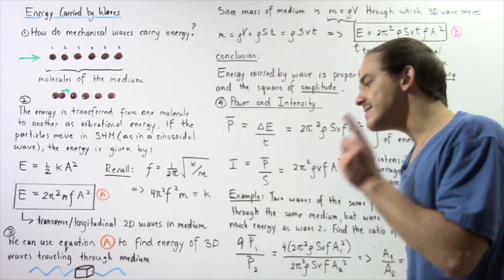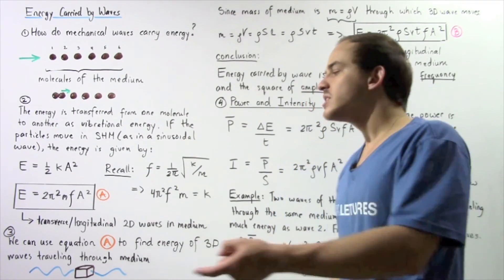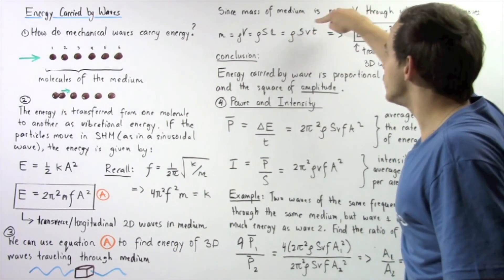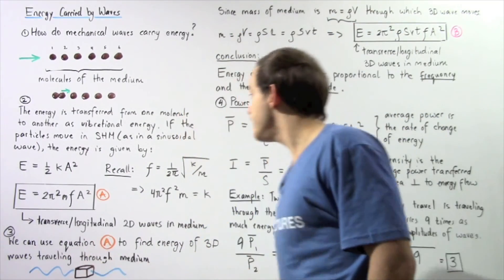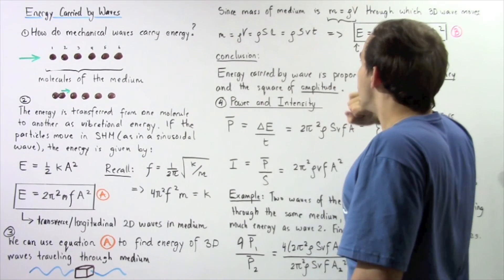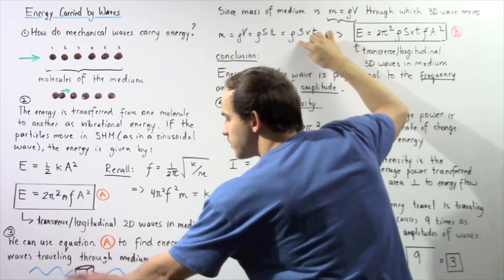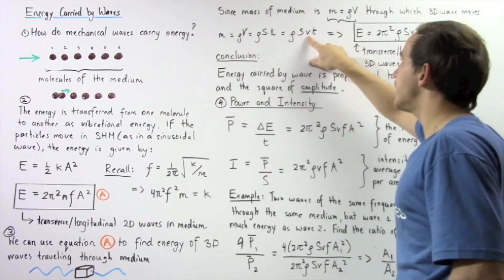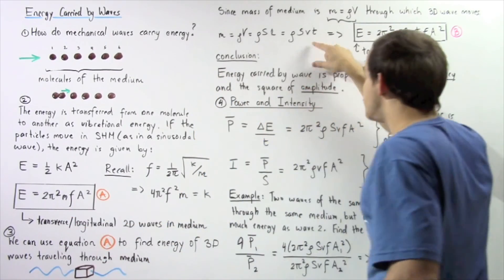We can replace L with the product of the velocity of the wave and the time it takes the wave to travel through this volumetric region. So length equals velocity times time. Therefore, the mass of our region of medium equals the density multiplied by the surface cross-sectional area S multiplied by the velocity of the propagating wave multiplied by the time it takes the wave to travel through this volumetric region.